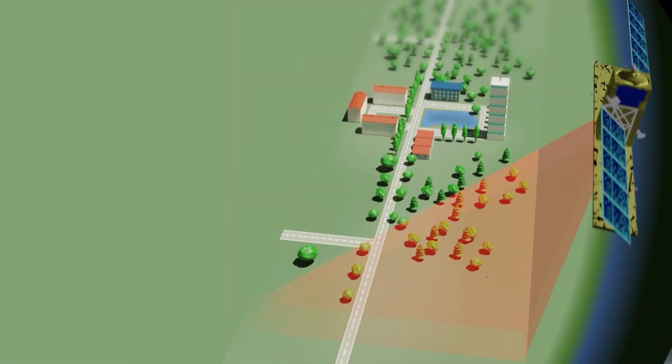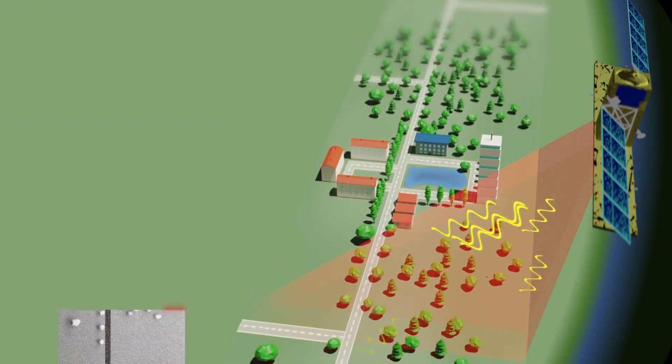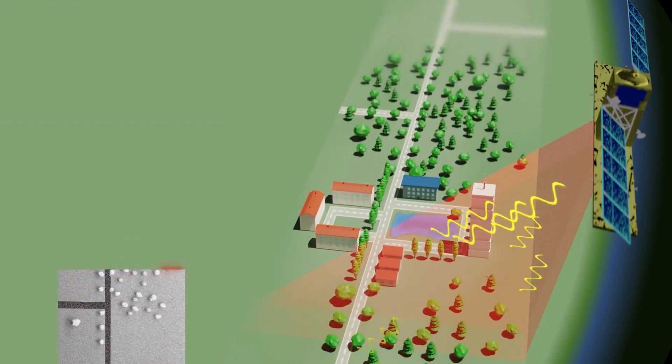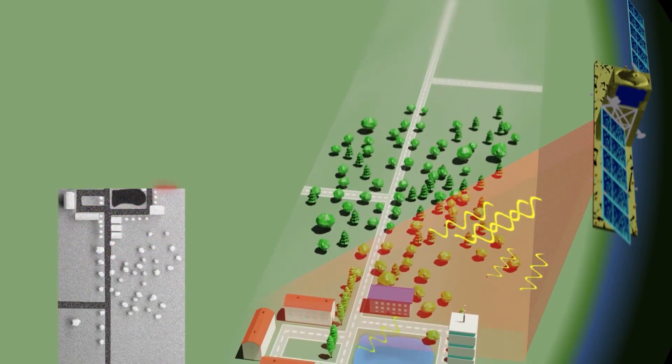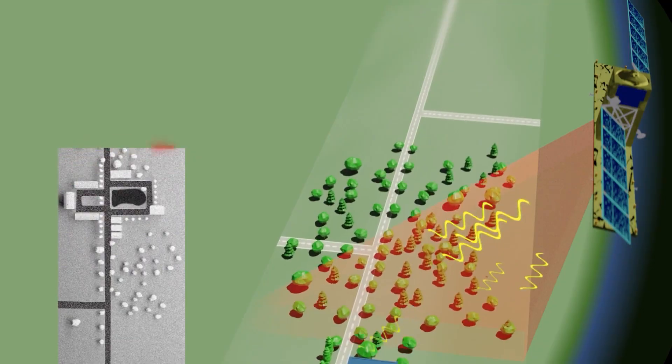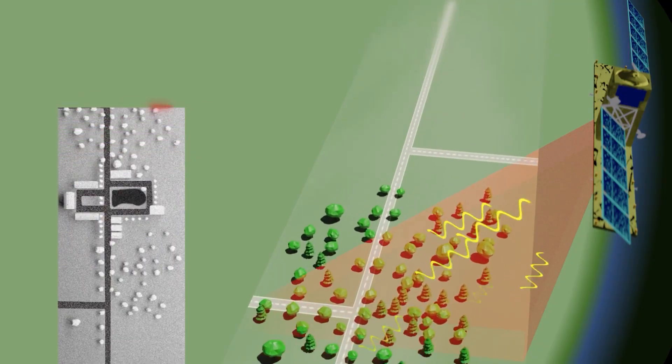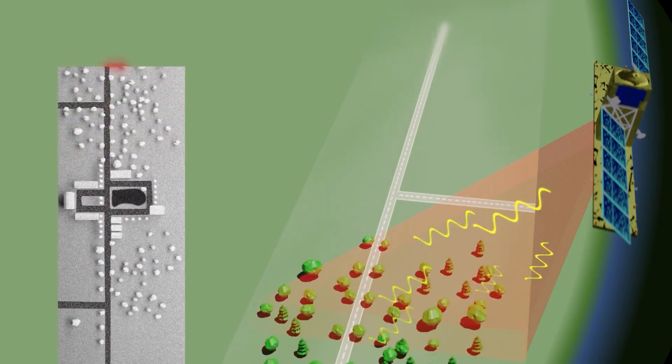These properties also allow radar satellites to measure the reflection and thus the characteristics of various objects on the Earth's surface. By measuring the distance, these measured points can be spatially assigned, thereby creating an image of the Earth's surface.